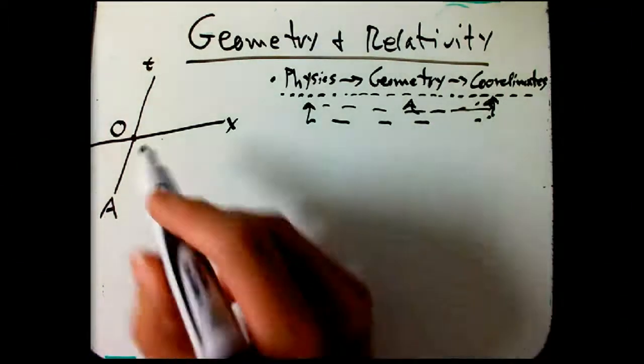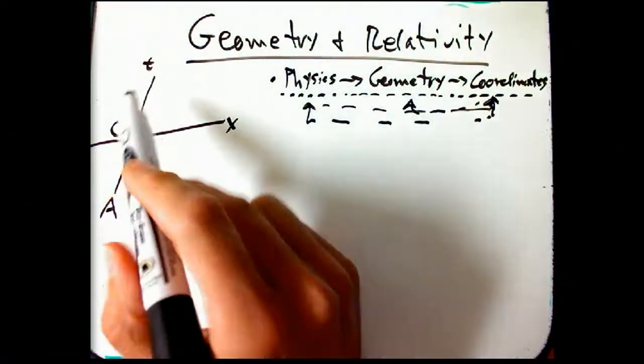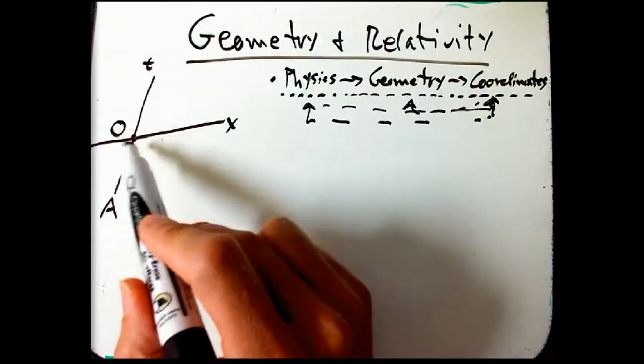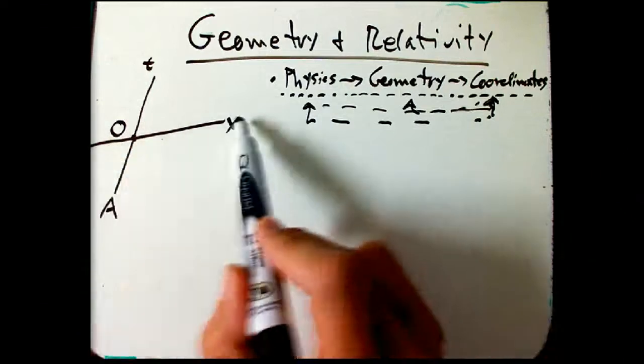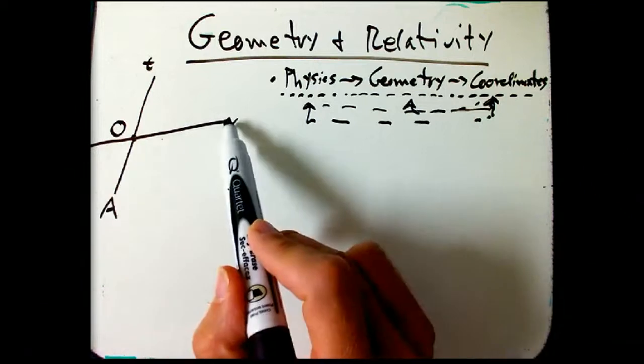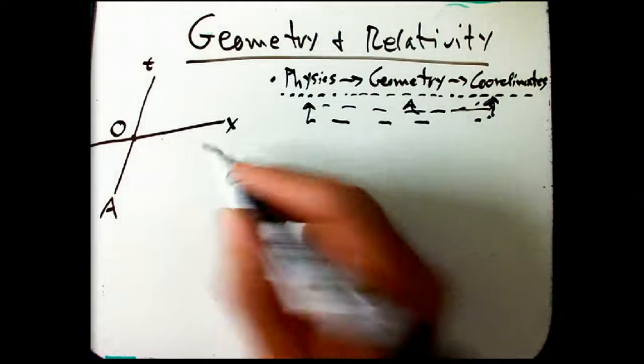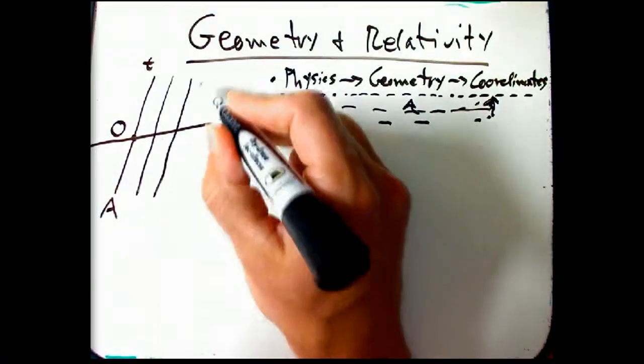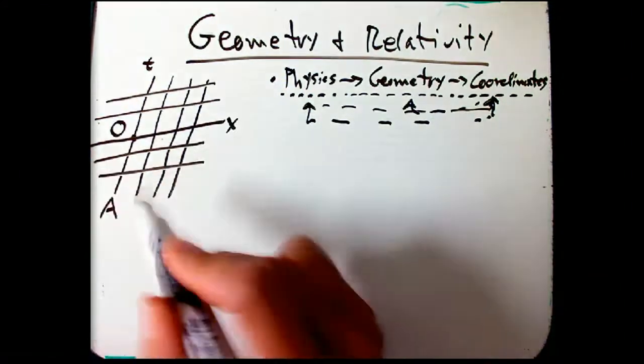So what we've done in the last video is with an observer A, we declare that world line, an unaccelerated observer's straight line, to be the t-axis. Pick some event along that world line, and then we figured out a way with laser or radar ranging to figure out physically what the orthogonal complement should be. And that's the space direction according to this observer.